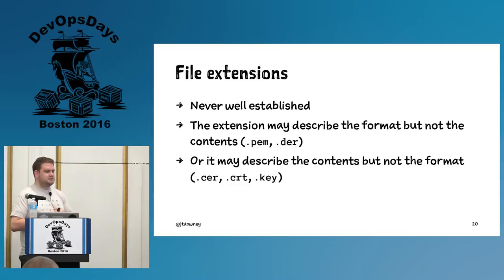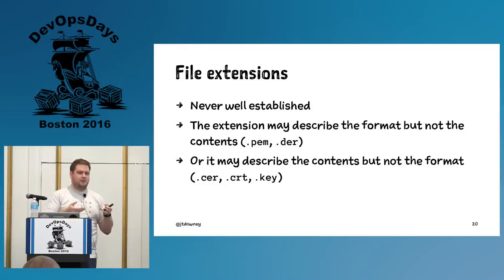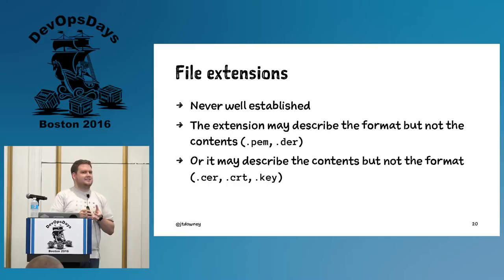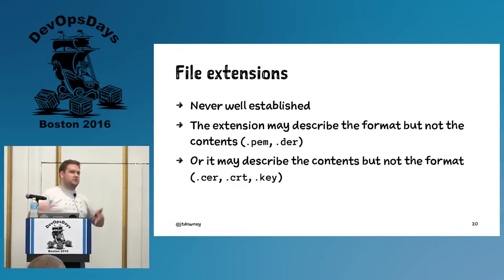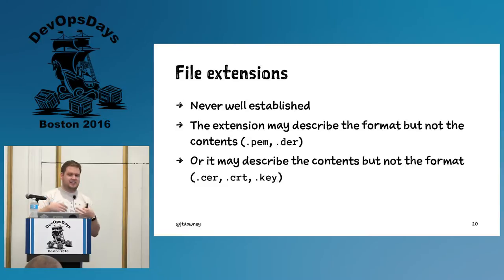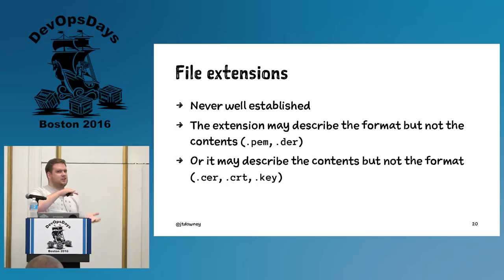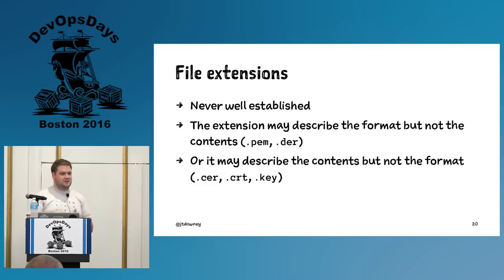The first problem I run into is when someone hands me a file — you can't necessarily always tell what's in it, because we didn't do a great job establishing file extensions. You'll see things with .pem or .der, which describes the format but not the contents. Or you may have something ending in .crt or .key, but it doesn't tell you what it's encoded as — it could be PEM, it could be DER. I find this incredibly confusing.